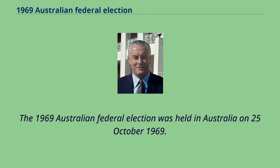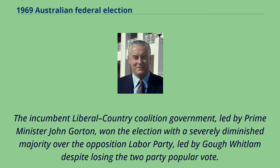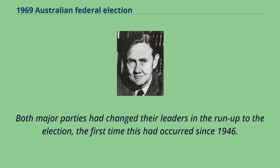The 1969 Australian federal election was held on October 25, 1969. The incumbent Liberal-Country Coalition government, led by Prime Minister John Gordon, won the election with a severely diminished majority over the opposition Labour Party, led by Gough Whitlam, despite losing the two-party popular vote. Both major parties had changed their leaders in the run-up to the election, the first time this had occurred since 1946.